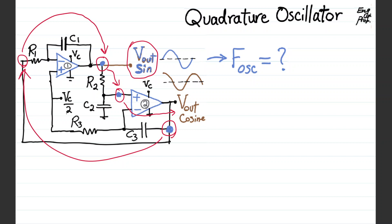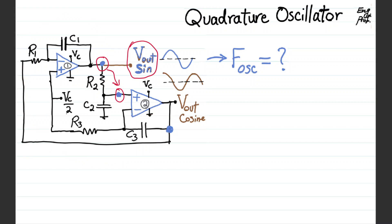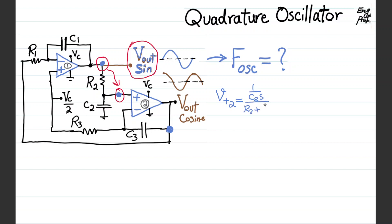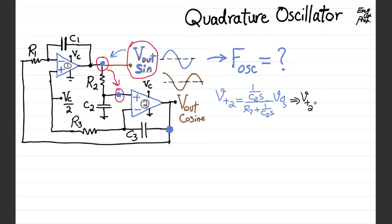We want to make sure that through this loop the gain is 1 for stable oscillation. From Vout sine to the positive input terminal of op-amp 2 is just a simple voltage division between R2 and C2. So V+ of op-amp 2 equals (1/C2S) divided by (R2 + 1/C2S) times Vout sine, which simplifies to 1/(1 + R2·C2·S) times Vout sine. This is equation 1.